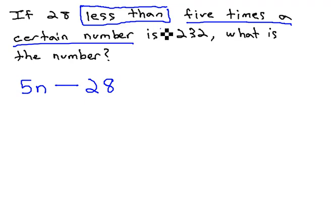The next key phrase we see is the word is. Is is a variation of the verb to be, and whenever we see to be, is, will be, were, was, or any conjugation of this verb, generally mathematically that will translate to equals.